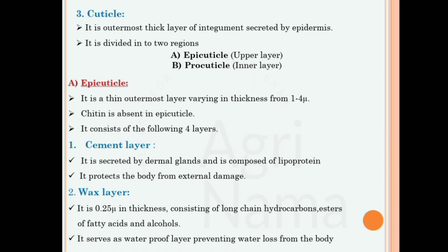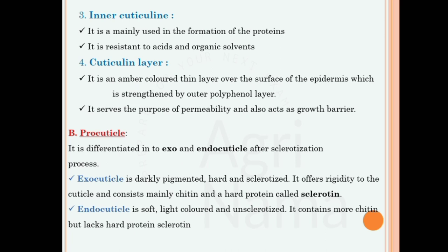Inner cuticulin is mainly used in the formation of protein and is resistant to acids and organic solvents, protecting insects from such chemicals. The cuticulin layer is an amber-colored thin layer over the surface of the epidermis, strengthened by an outer polyphenol layer. It serves the purpose of permeability and also acts as a growth barrier, preventing uncontrolled growth of insects.